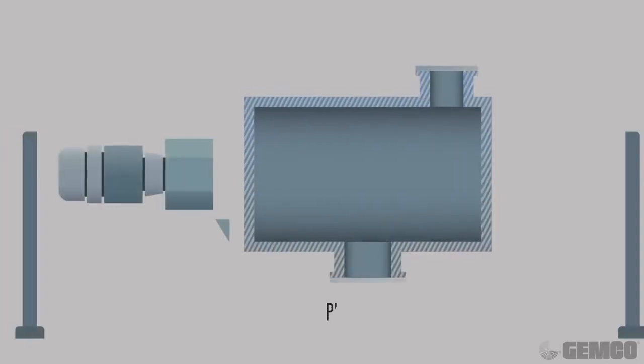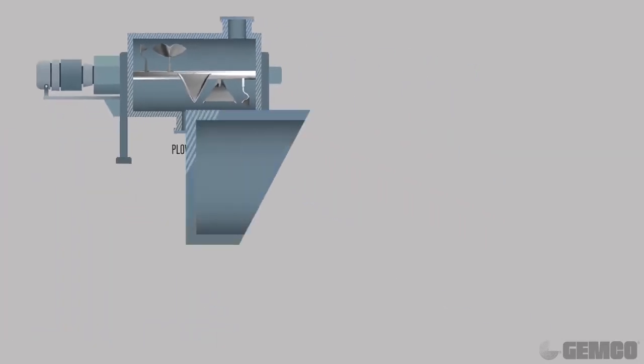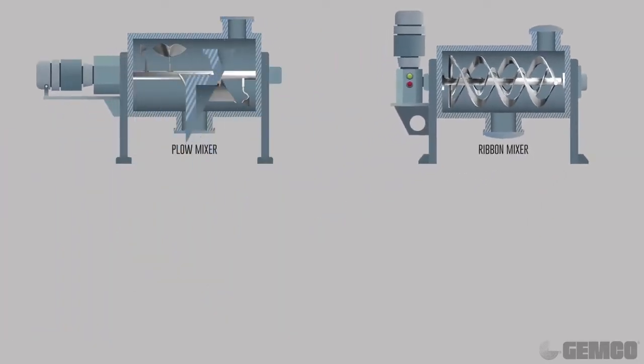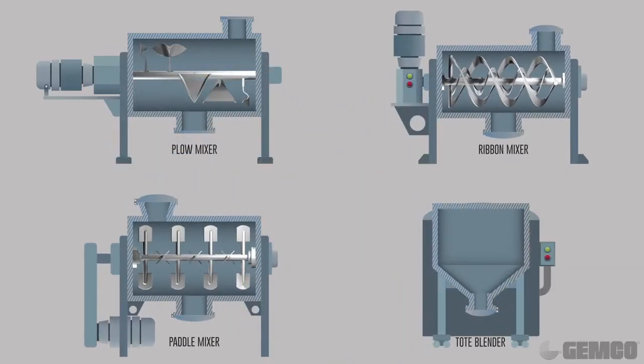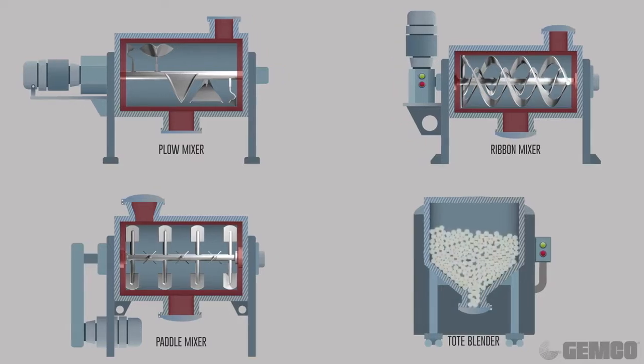Now let's look at our competition. Plow mixers, ribbon mixers, paddle mixers, and tote blenders have dead spots resulting in unprocessed materials and inconsistent batches. These mixers have multiple dead zones allowing powder to hang up and not blend within the batch. They also do not provide any geometric uniformity.